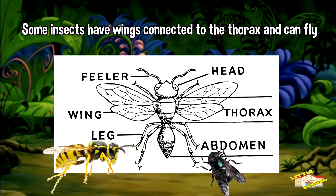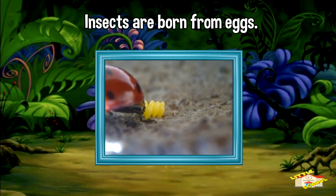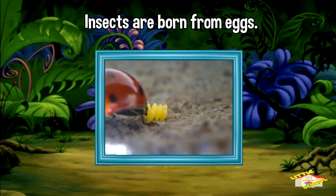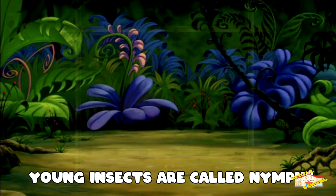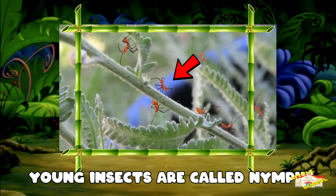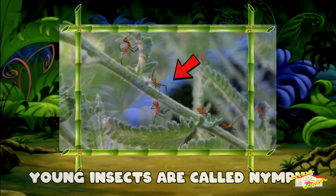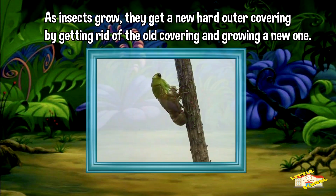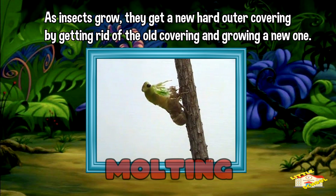Some insects have wings connected to the thorax and can fly. Insects are born from eggs. Young insects are called nymphs. As insects grow, they get a new hard outer covering by getting rid of the old covering and growing a new one. This process is called molting.